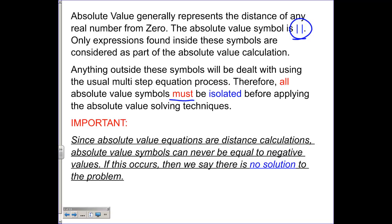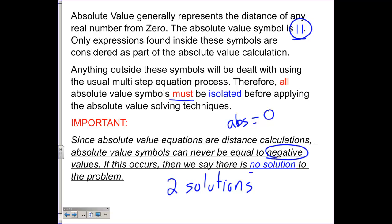Most of the time our absolute values will have two solutions. If the absolute value — we're going to abbreviate that as abs — is equal to zero, then you're only going to have one solution. And if the absolute value is equal to a negative, then there will be no solution.